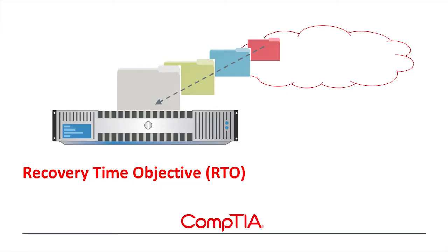Maybe they can lose an hour, maybe four hours, maybe a day of data, and they'll still be okay after the disaster event. RTO, or recovery time objective, is the amount of time that it takes to recover from that disaster or event. For example, the server crashes — it takes four hours to get back up and running from a day ago. That's a great way to look at RPO and RTO combined.